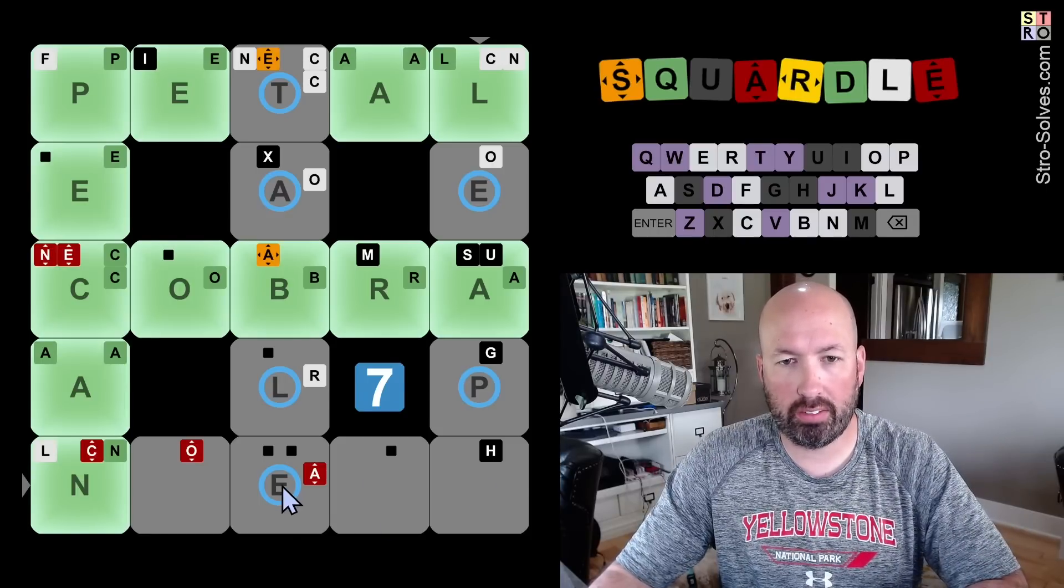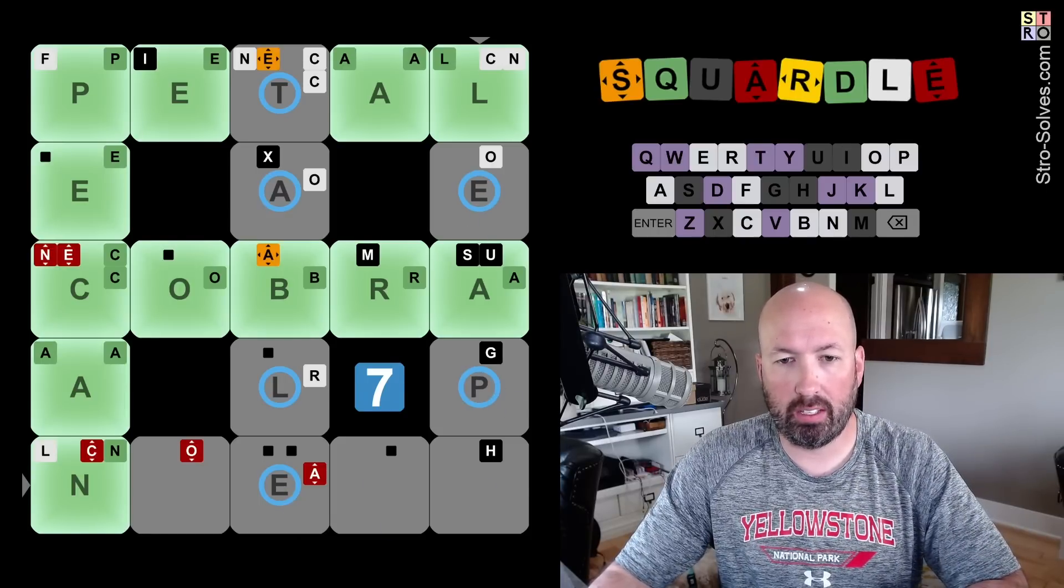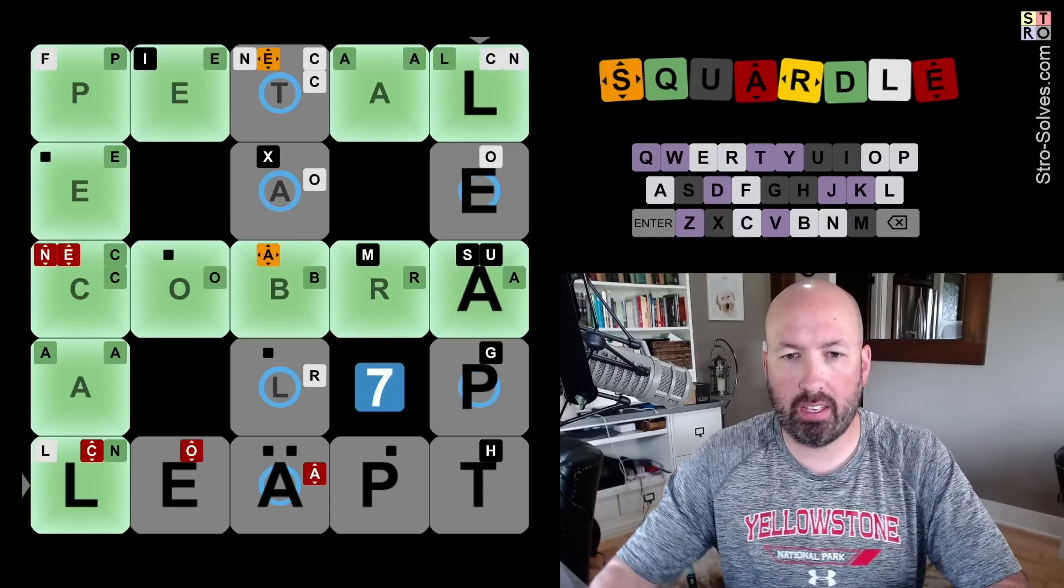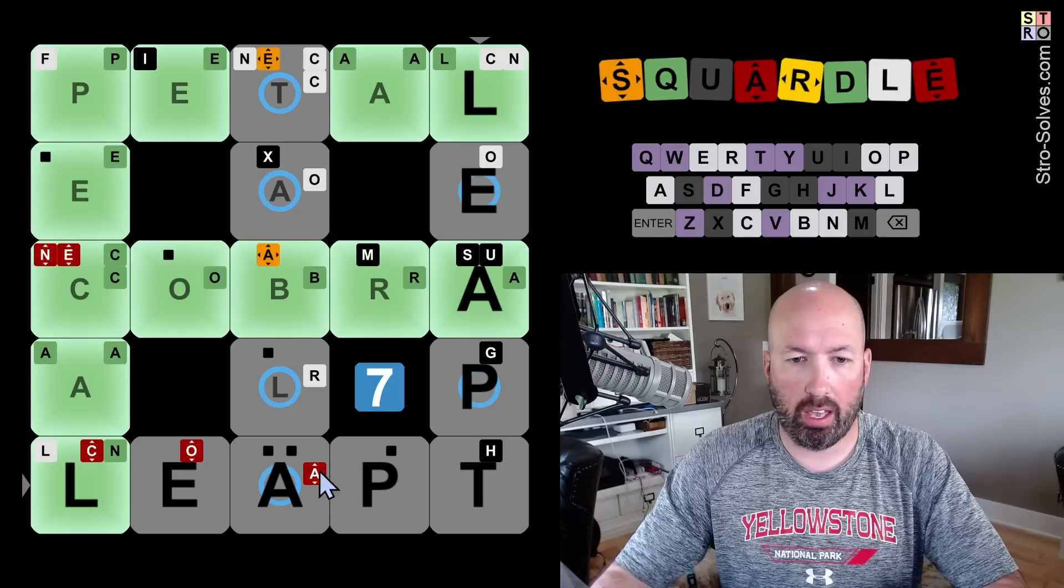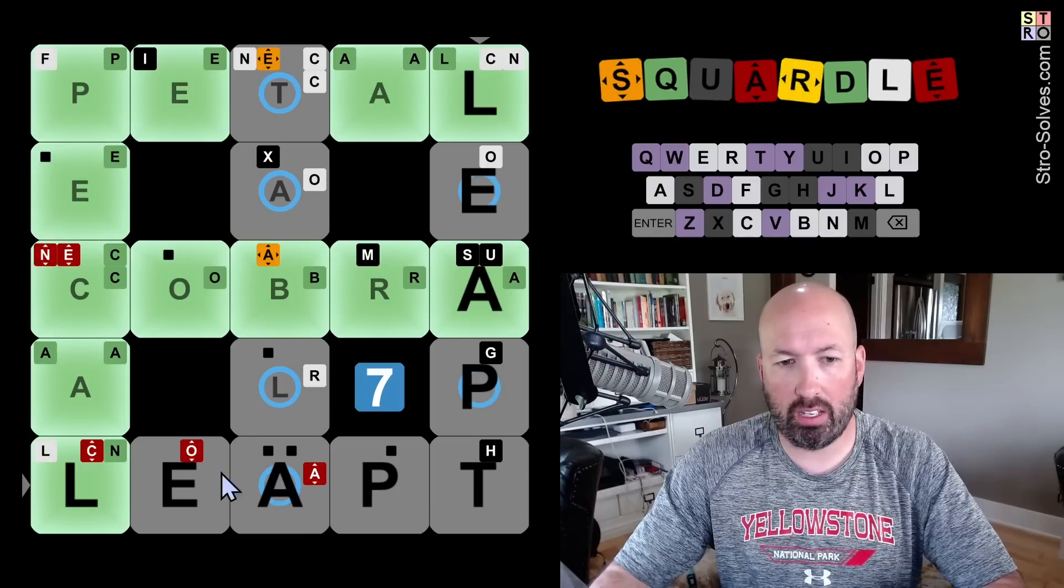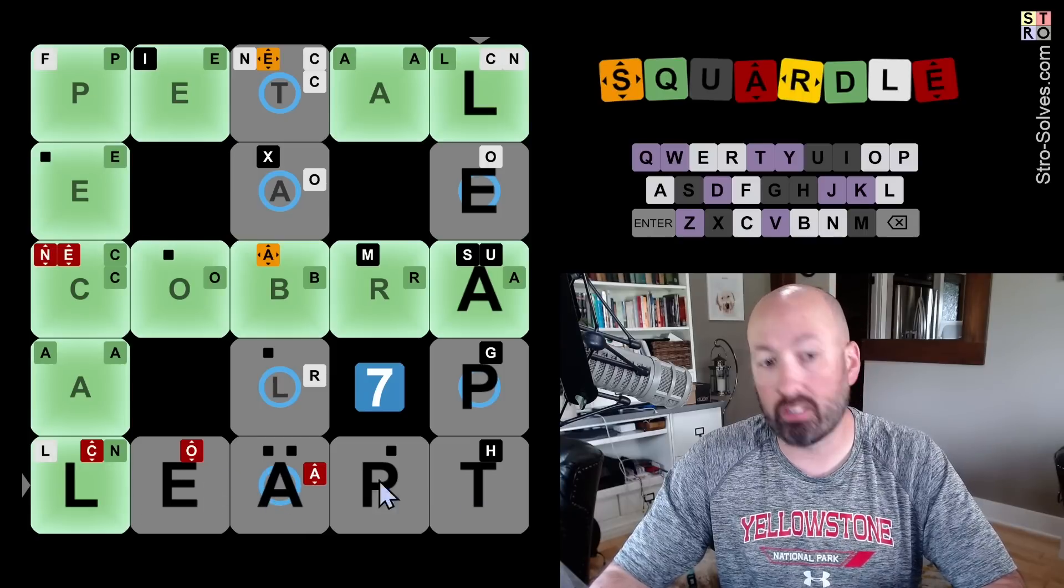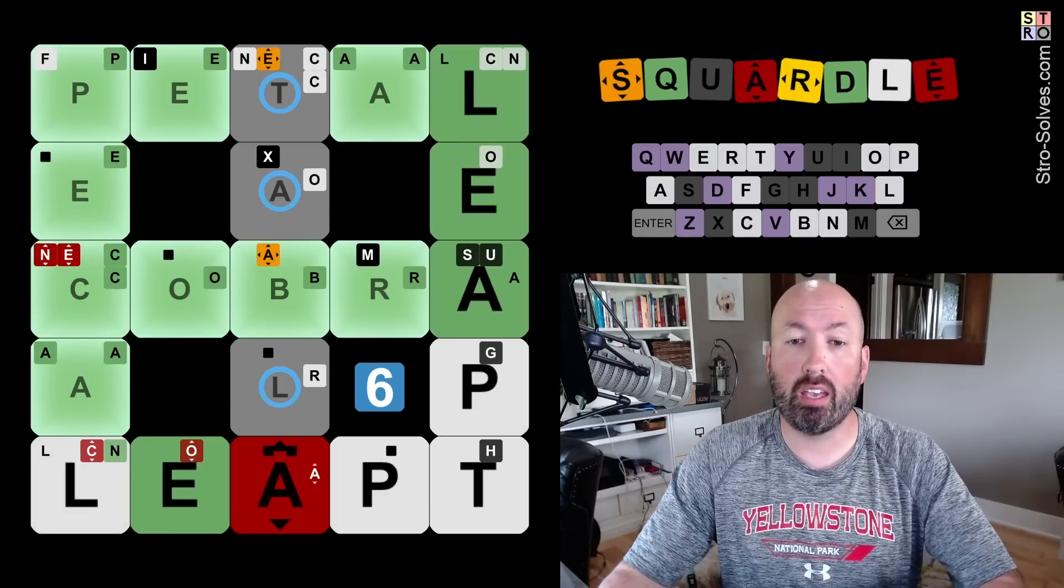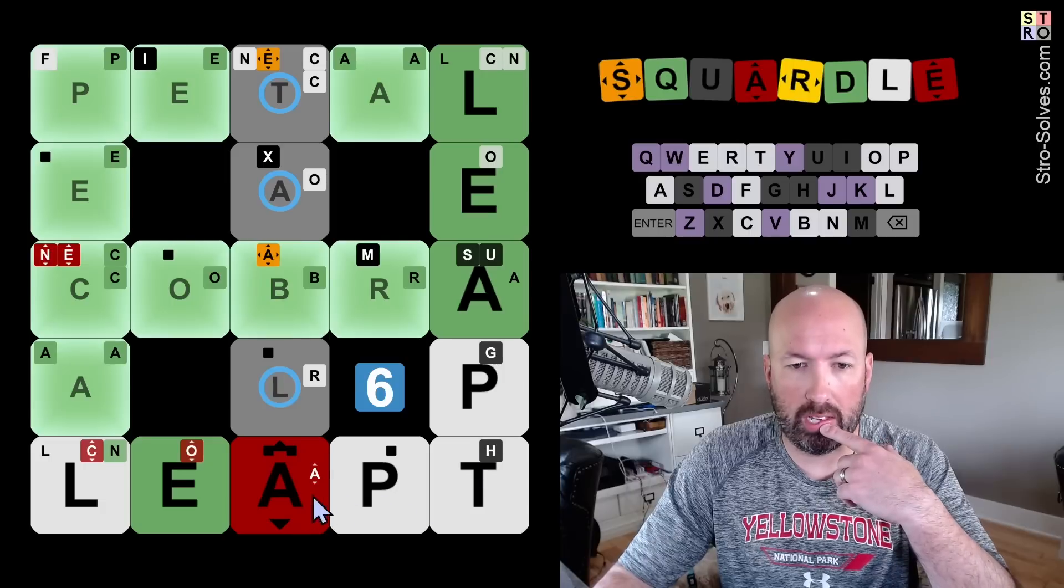All right. I'm just going to do LEFT. I think that has a decent chance over here. And we want to see if there's an E here, but the E here will at least tell us if there's an E in the row. So it's something. Okay. It was L, E, A, but it's not LEFT. Okay.